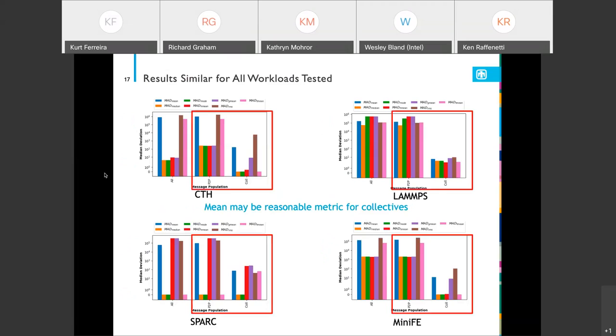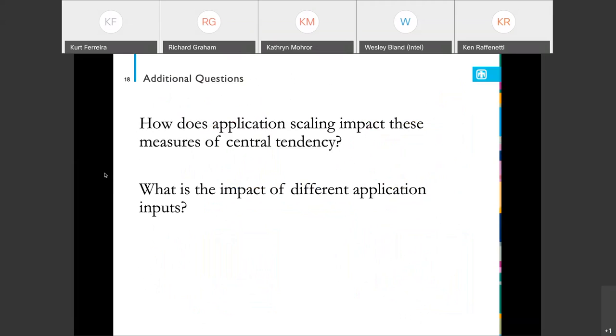And similarly to what we saw in CTH, for collectives, if we compare point-to-points and collectives, the MAD value for the mean for collectives is much lower. Therefore, the mean may be a reasonable metric for collectives, but it doesn't appear to be for point-to-points for anything that we tested.